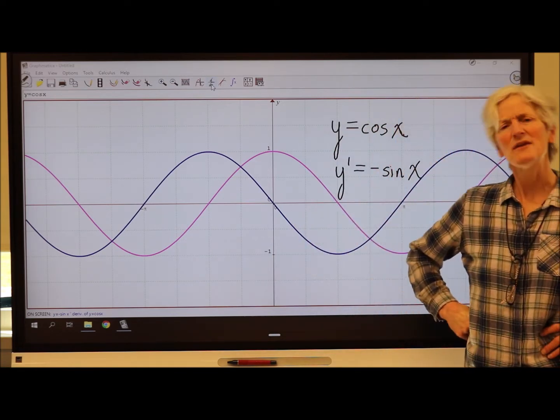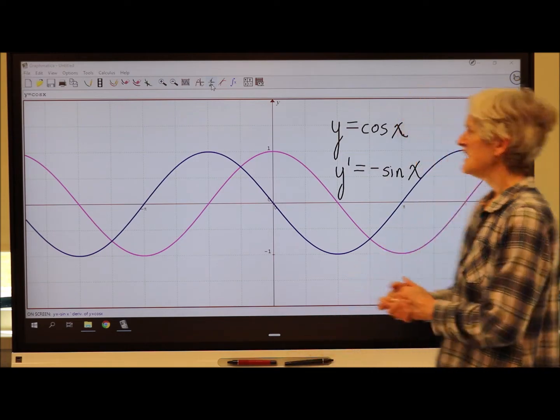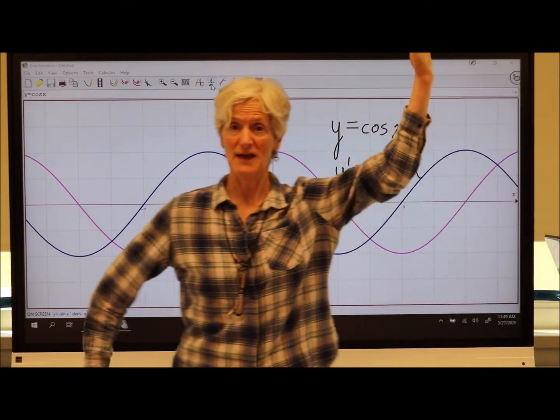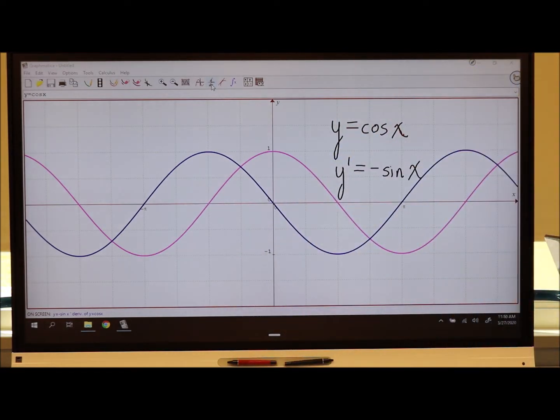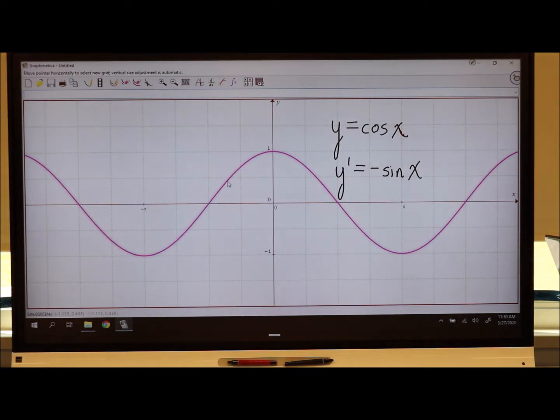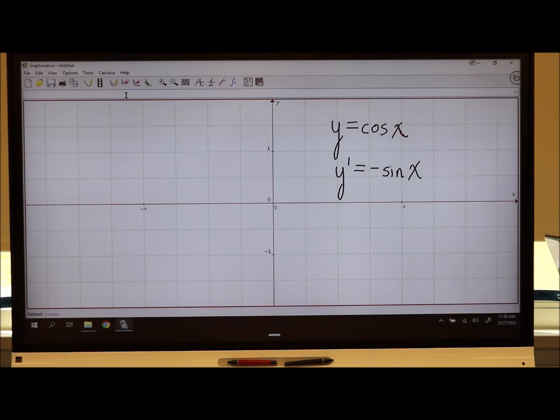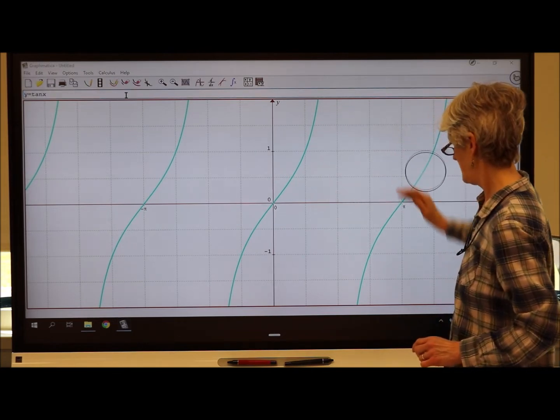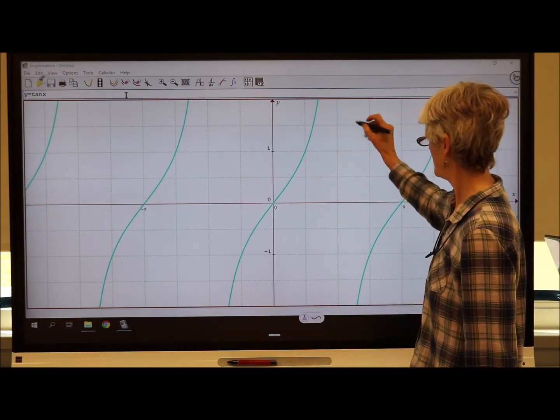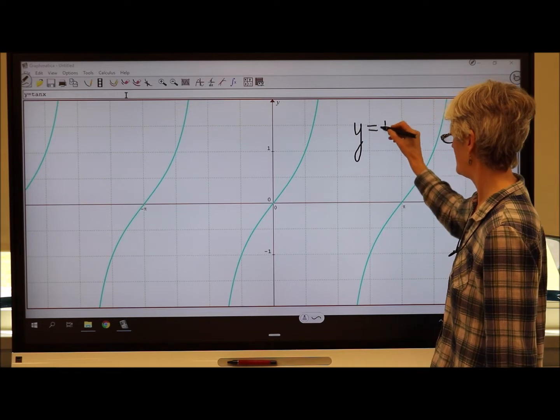I wonder what the derivative of tan of x is going to be. Let's remember, tan of x has all those asymptotes. So let's go ahead and sketch what a tan of x is going to look like.